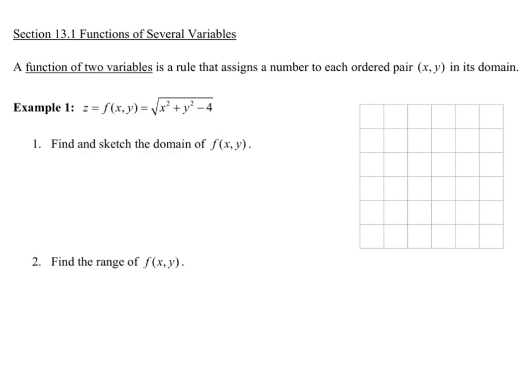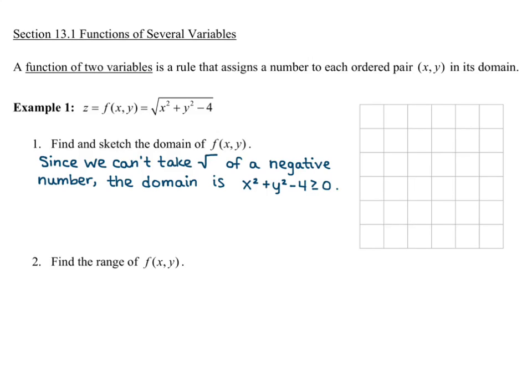In this first example, we have z equals f(x, y) defined by the square root of x squared plus y squared minus 4. We want to find and sketch the domain of the function and find the range. For the domain, think about what type of function you have and what the possible inputs are. Since we can't take the square root of a negative number, the domain requires everything under the square root to be greater than or equal to 0, so x squared plus y squared minus 4 is greater than or equal to 0.